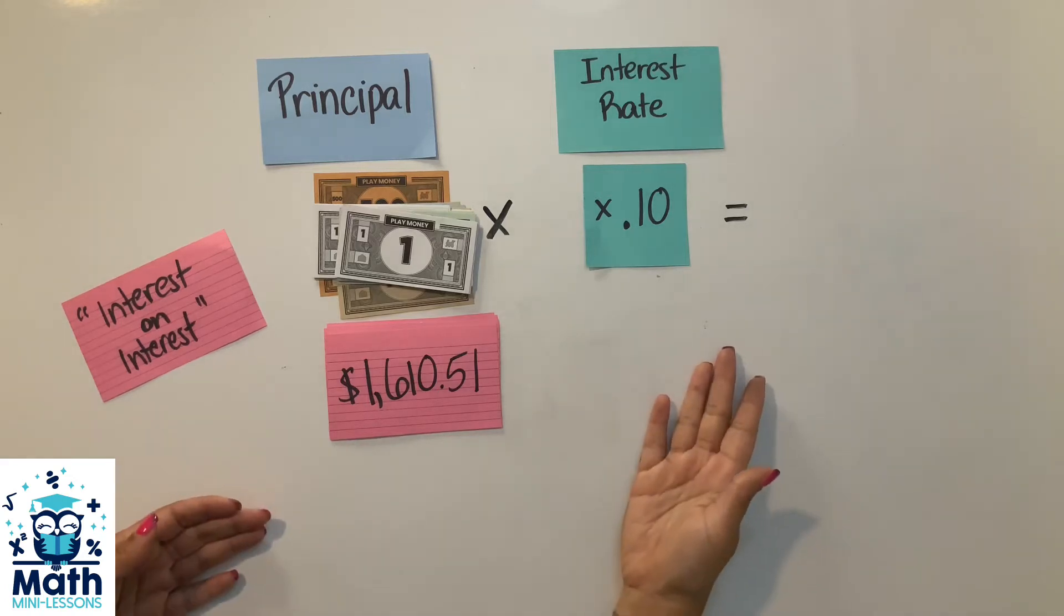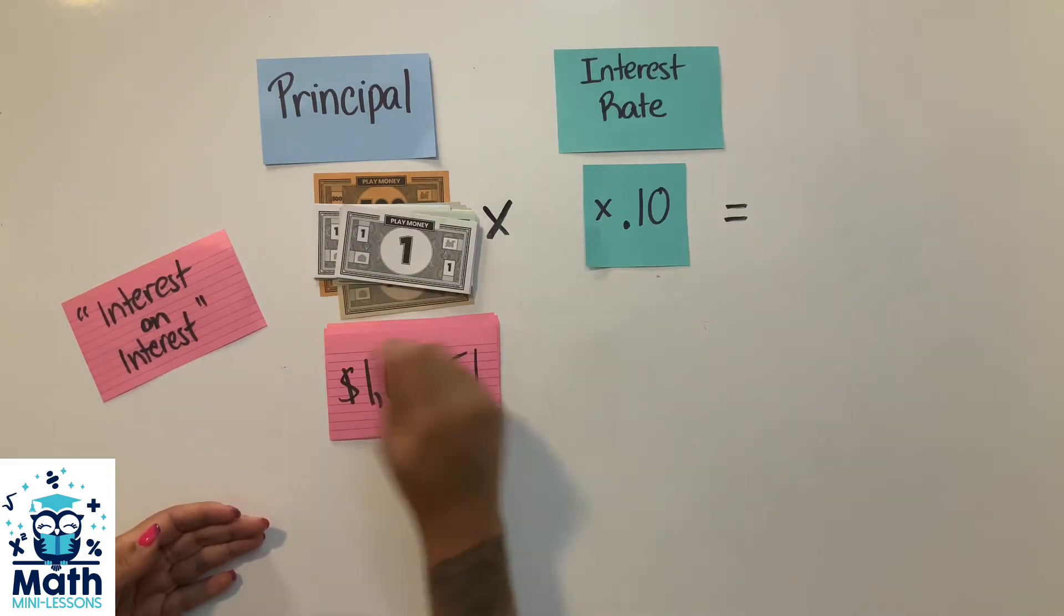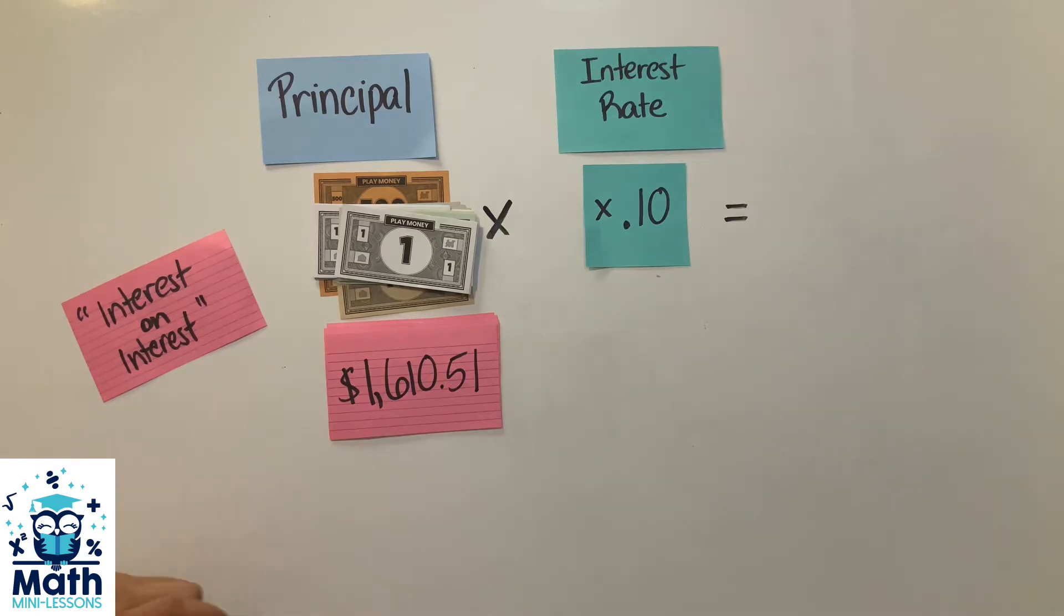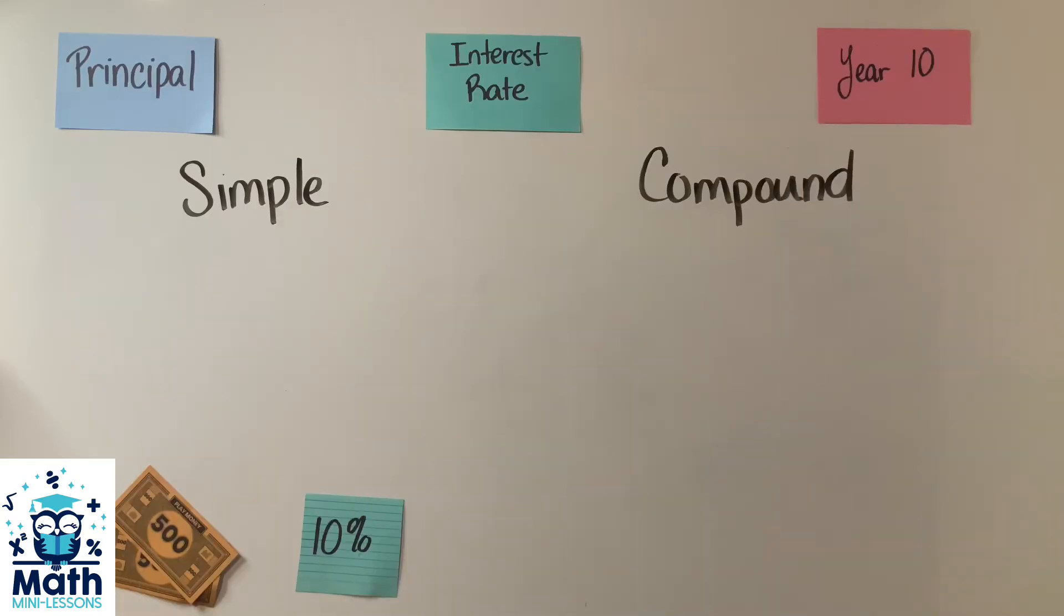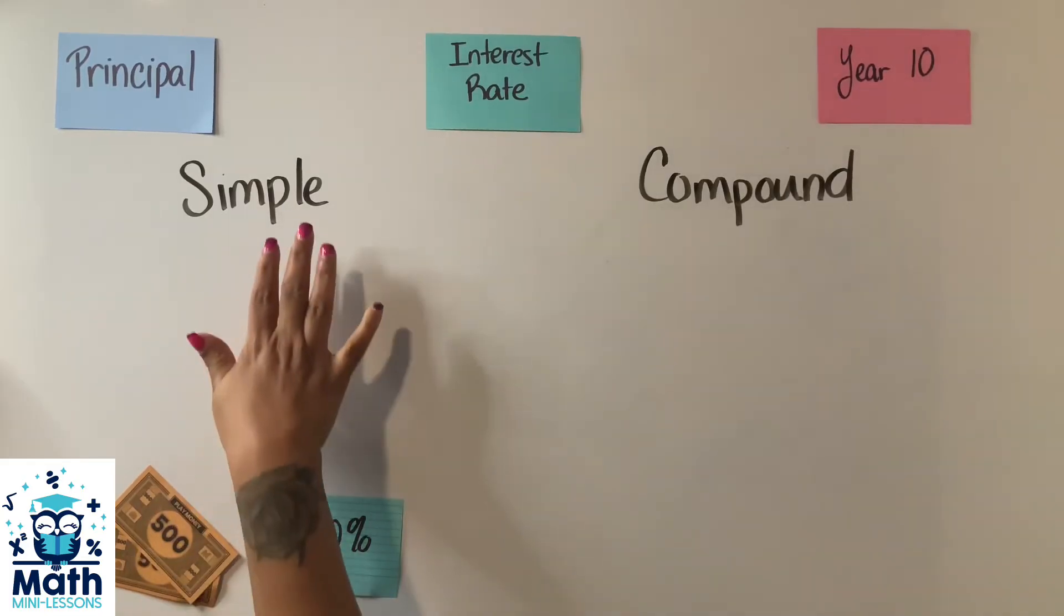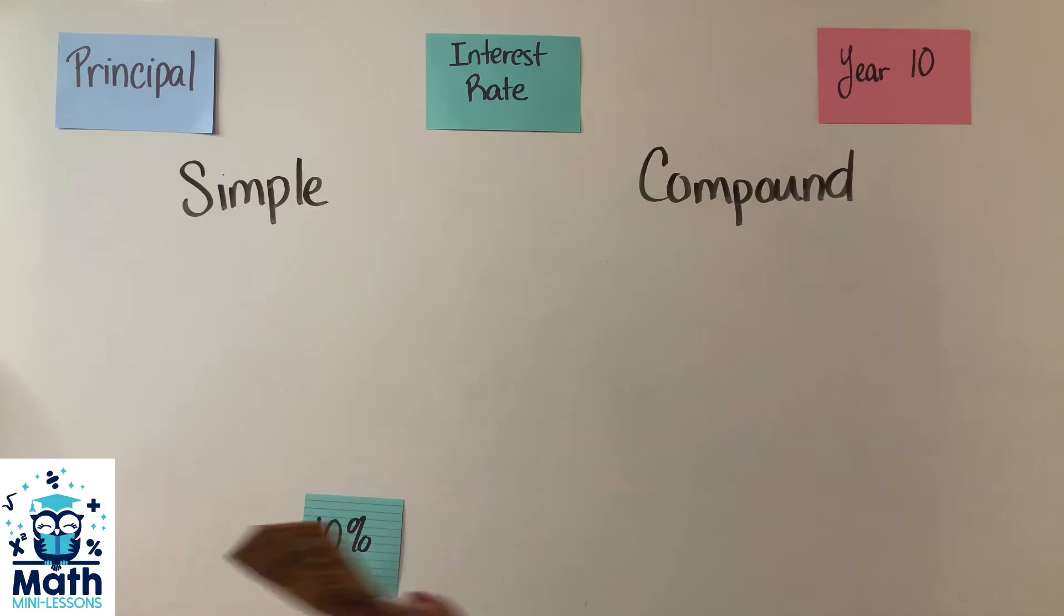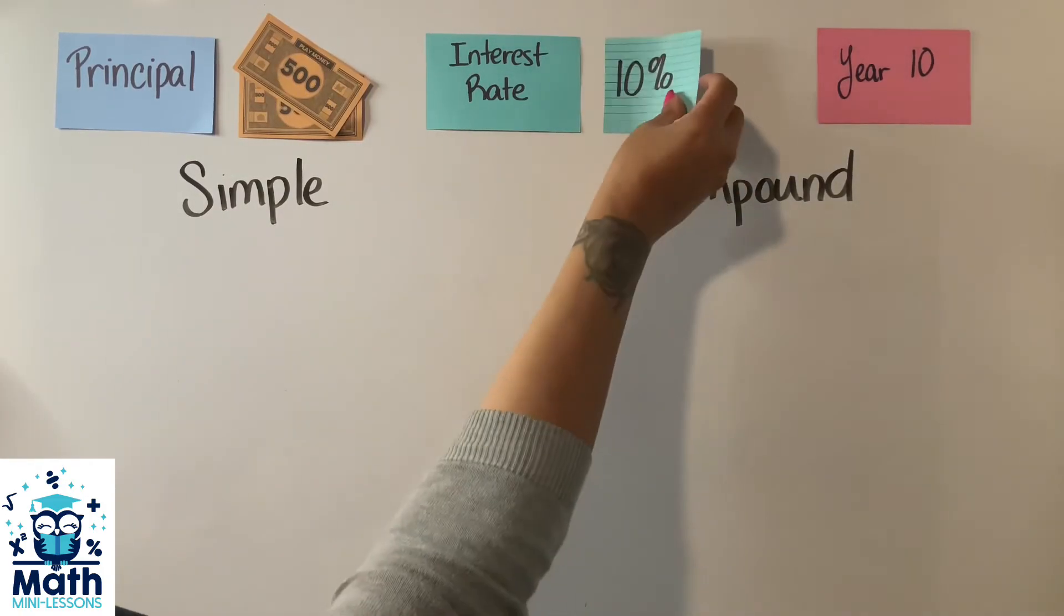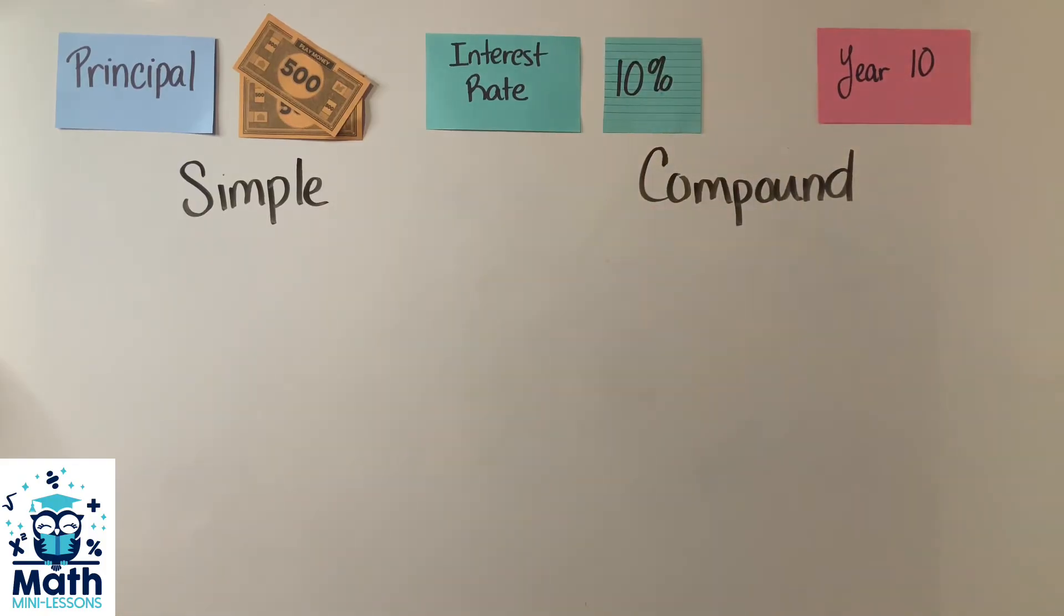But what would happen if I wanted to know the 10th year? Do I have to keep on doing it year at a time, or is there a faster way? And you guessed it, math marvel, there is a faster way using an actual formula. So let's go into that situation. Okay, let's compare the same situation with simple and compound interest. So again, my principal is $1,000 borrowed at 10% for 10 years, and we're going to start by comparing both formulas.